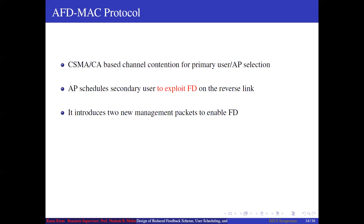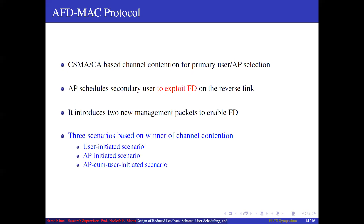The protocol introduces two new management packets to enable full duplex in WLAN. There are three scenarios based on the winner of the first channel contention. If a user wins the backoff process, the user sends an RTS packet to the AP, and the AP schedules another user and starts transmitting to it in parallel. If the AP is the winner, it starts transmitting a packet to a user and in parallel informs another user to transmit to it. In another scenario, if the AP and a user's backoff counters expire simultaneously, and the AP's destination node is hidden from the user whose backoff counter also expired, then both can communicate in parallel.